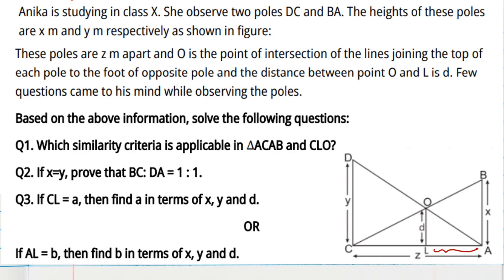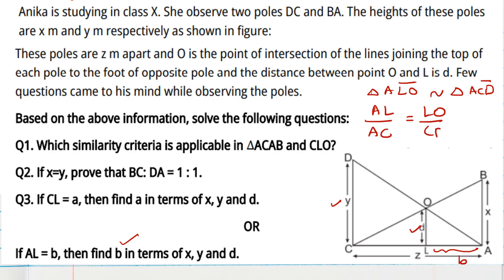Now AL is given as B and we should find B in terms of X, Y, and D. We can take triangle ALO, and similarly prove that triangle ALO is similar to triangle ACD. So AL by AC equals LO by CD, giving B by Z equals D by Y. Therefore B equals ZD by Y. This is the answer.